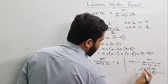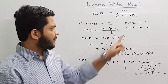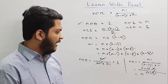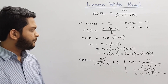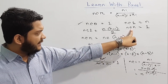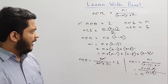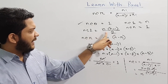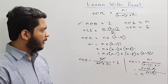So n will be the result — nC1 equals n. We have to see the n factorial, so n factorial is n factorial. So n factorial is n factorial.